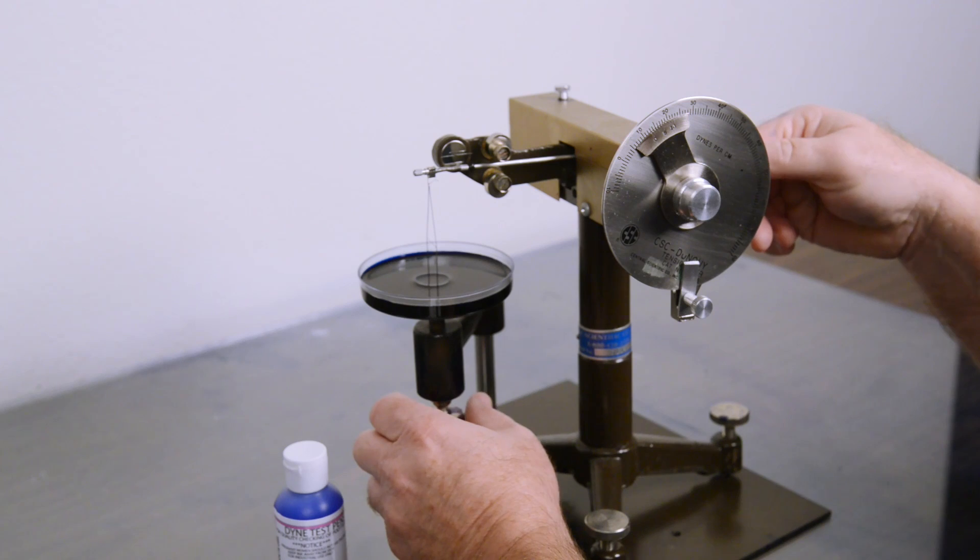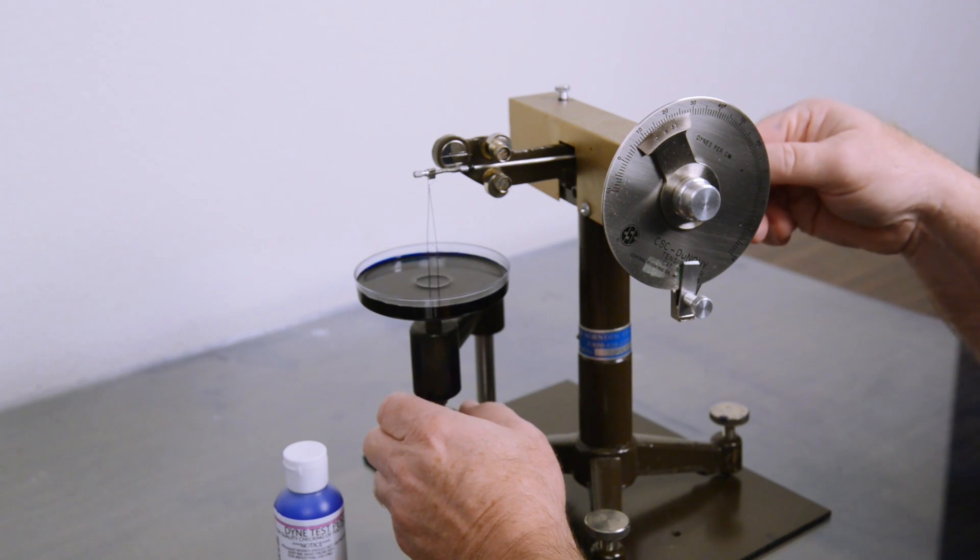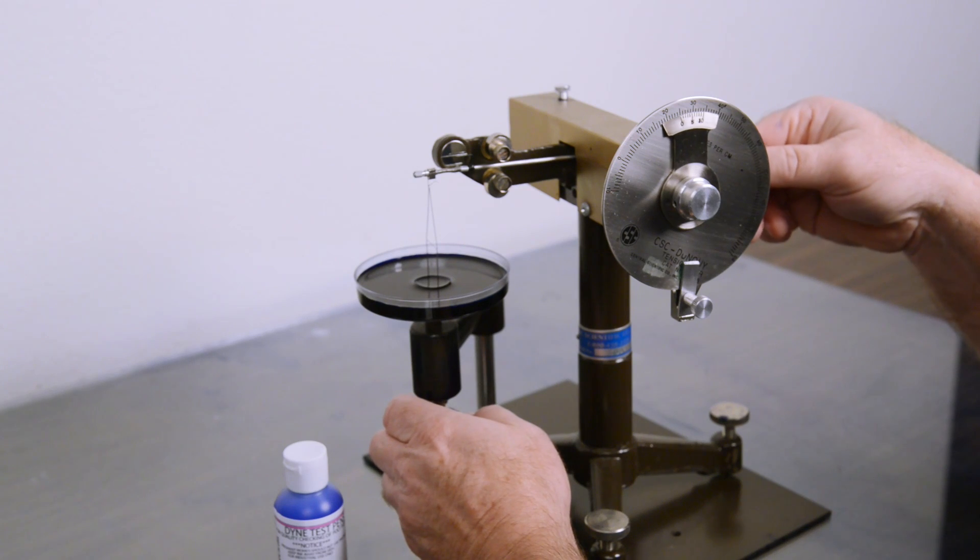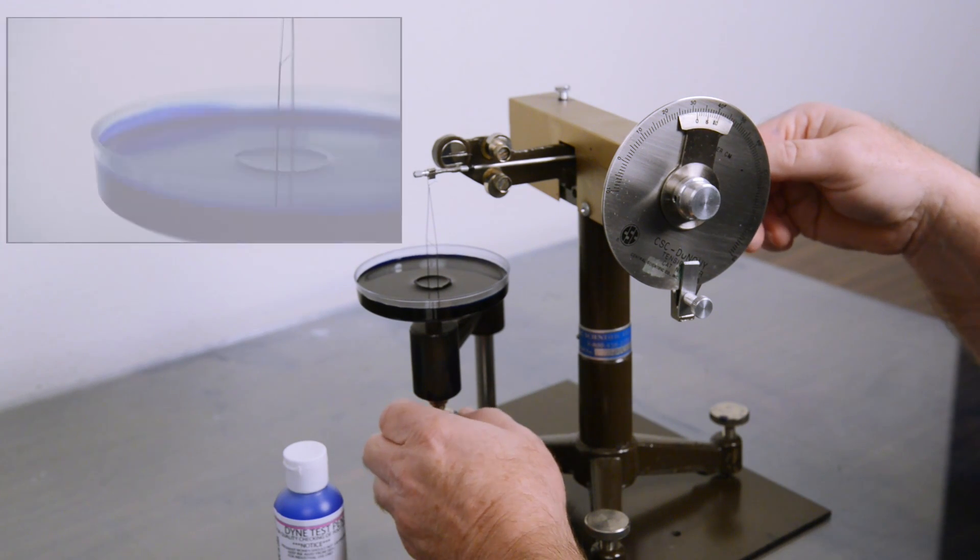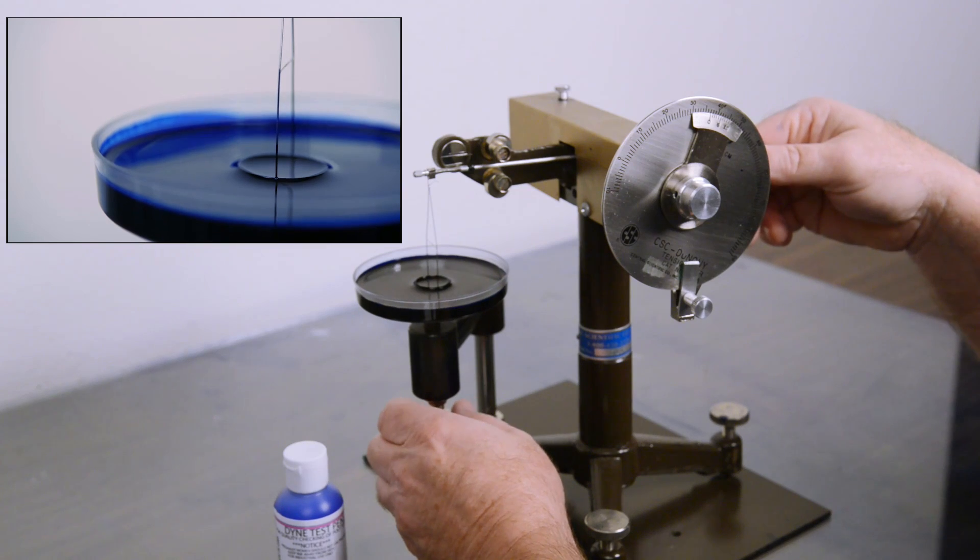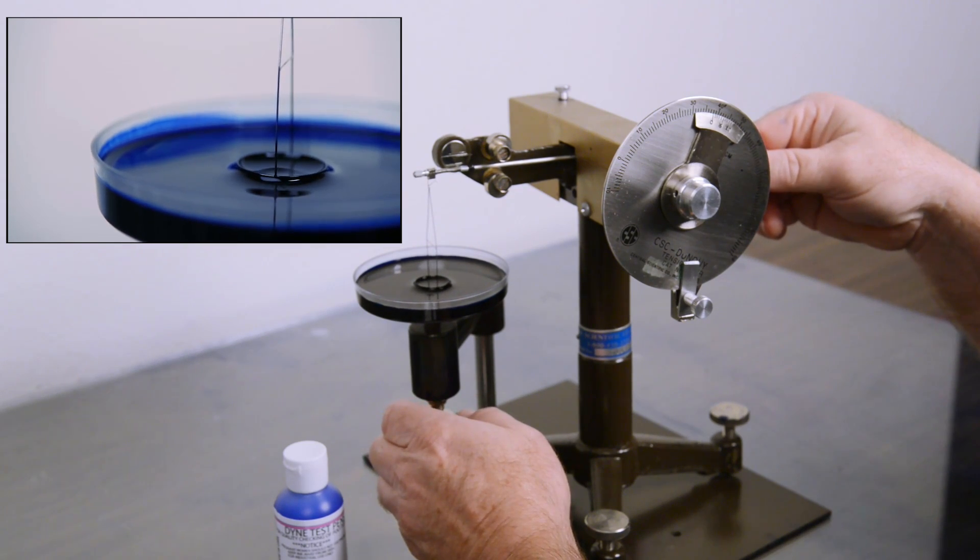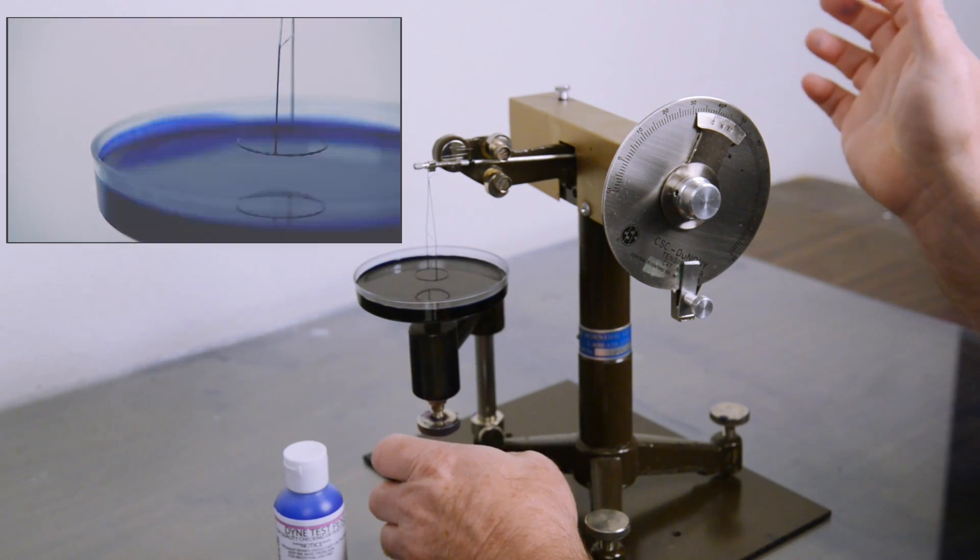We can start turning the dial for the tension. While still lowering the arm, raising the tension, lowering, raising, lowering, raising, and we are going to start looking to see where the bubble breaks, which it breaks.